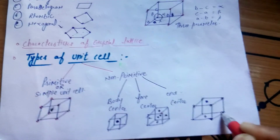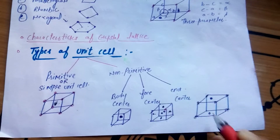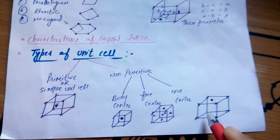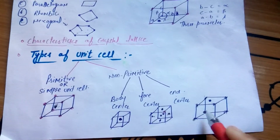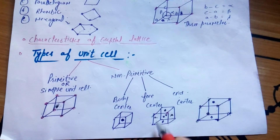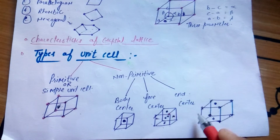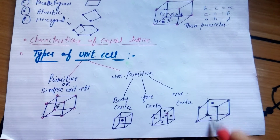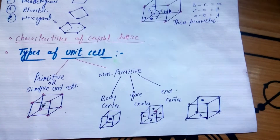To summarize: if you have an extra atom at the body center, you can see the body center unit cell. If you have an atom on each face, you can see the face center unit cell. If you have an atom on the top and bottom faces only, you can see the end center unit cell.